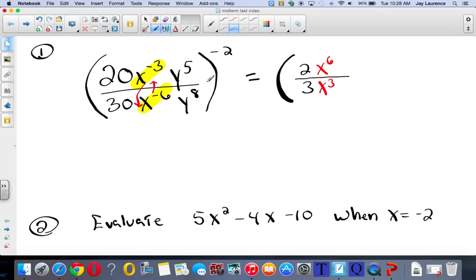And their exponents will change because a negative exponent means to use the reciprocal. All right, now the y to the 5th and the y to the 8th aren't going to move, so I'm just going to go ahead and simplify them. And it looks like we need a y cubed into the denominator.